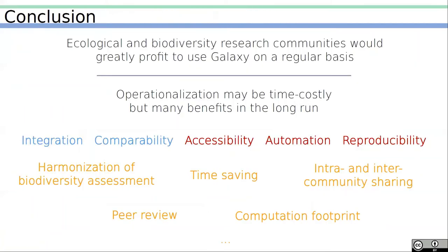To conclude, we have the feeling that ecological and biodiversity research communities would greatly profit from using Galaxy on a regular basis, and we proved it can be carried out properly, notably through the implementation of the POMPA workflow. We realized operationalization may be time-costly, but it would have many benefits in the long run, such as harmonization of biodiversity assessment, time gain for future layers and adaptation of common computations, facilitation of sharing data analysis and projects between and within communities, facilitation of peer reviewing of analysis protocols, and even reduction of computation environmental footprint.